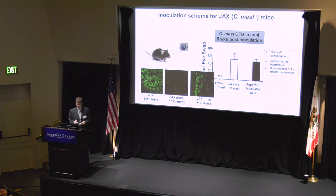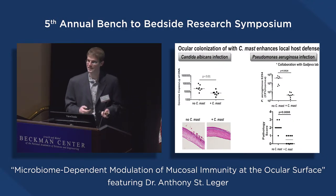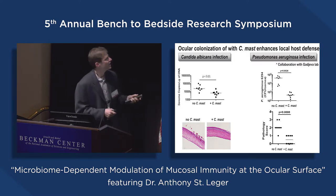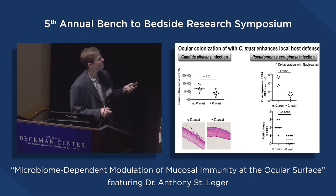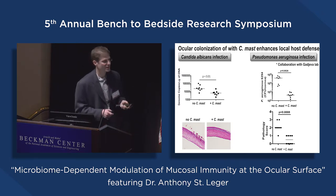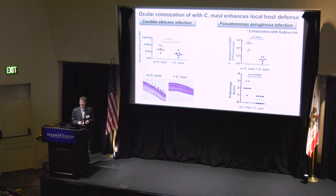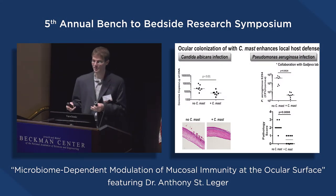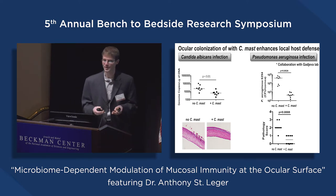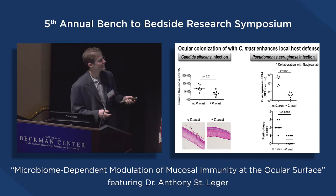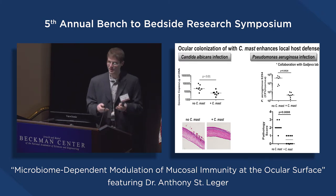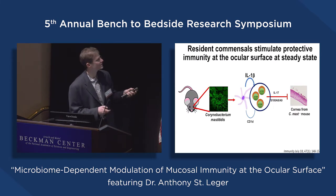From our FISH staining we confirmed this colonization. We then challenged mice with both fungus and bacteria to see if C-mast imposed beneficial immunity. We saw significant reductions in fungal genome copies infecting the tissue whenever C-mast was present. We also collaborated with Mihaela Gadhiva at Brigham and Women's using a Pseudomonas aeruginosa infection model and again saw similar reductions in bacterial burden and pathology score — confirming the phenotype crosses institutional borders and establishing a causal relationship between Corynebacterium mastiditis and protection against infectious ocular disease.